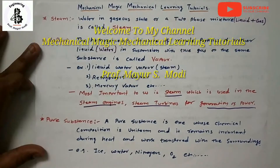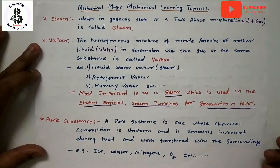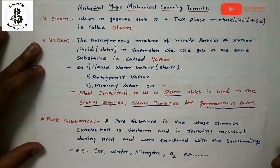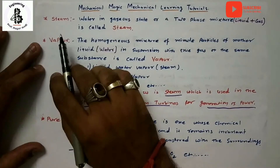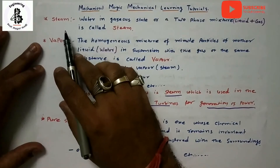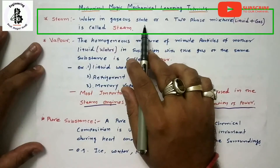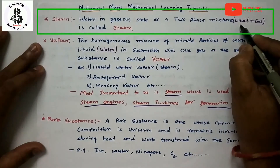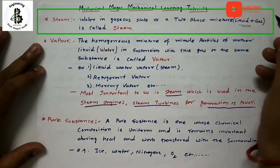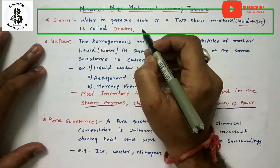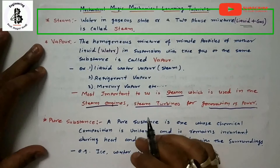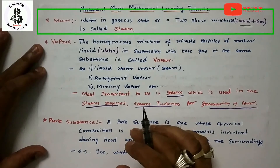Welcome to my YouTube channel Mechanical Magic - Mechanical Learning Tutorials. In this video I am talking about some important terminology in the field of thermodynamics. Steam is defined as water in a gaseous state, or a two-phase mixture made with liquid and gas. Generally, for the generation of electricity or for turning a turbine, such kind of steam is used as a working substance.